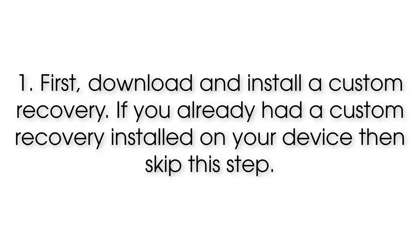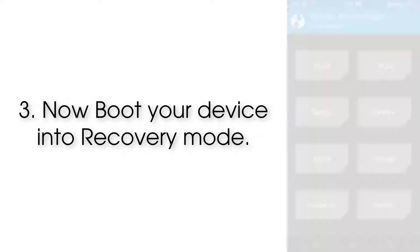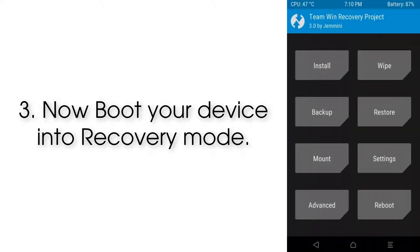Step 1: Download and install a custom recovery. If you already have a custom recovery installed on your device, skip this step. Step 2: Download the Android 8.0 ROM and GApps from the description below and save them on your device.